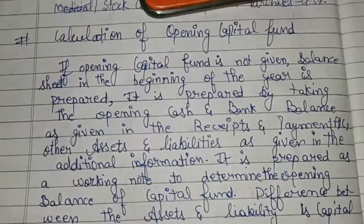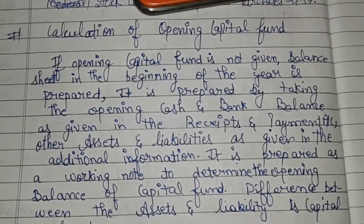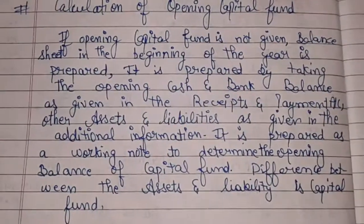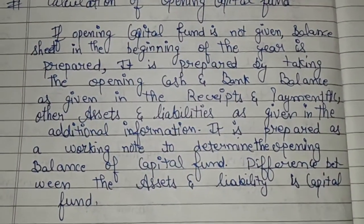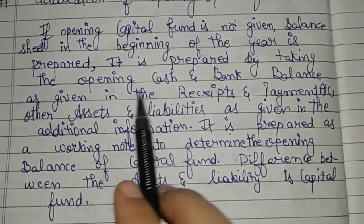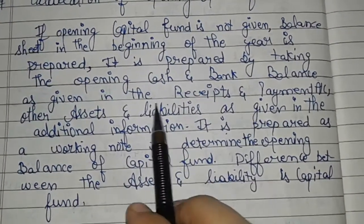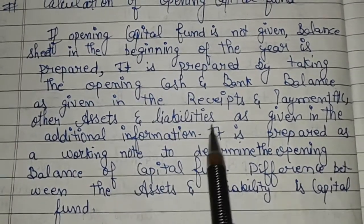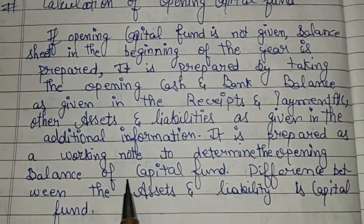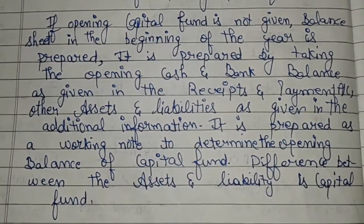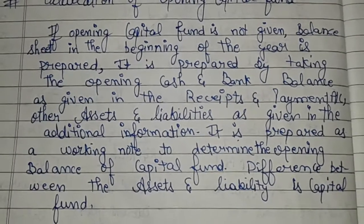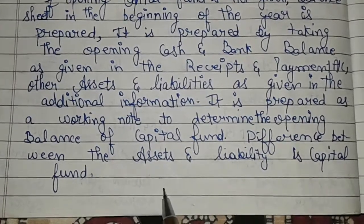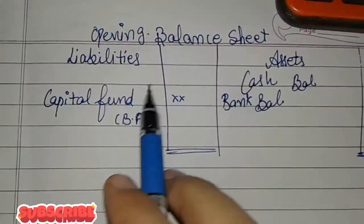If the opening capital fund is not given, first you have to make an opening balance sheet. The opening balance sheet is linked with the previous year. First, take the opening cash and bank balance from the receipts and payments account. Then post the assets and liabilities linked with the previous year into the opening balance sheet. After posting all the previous year information, the next step is to take the difference — the difference between assets and liabilities is known as capital fund.